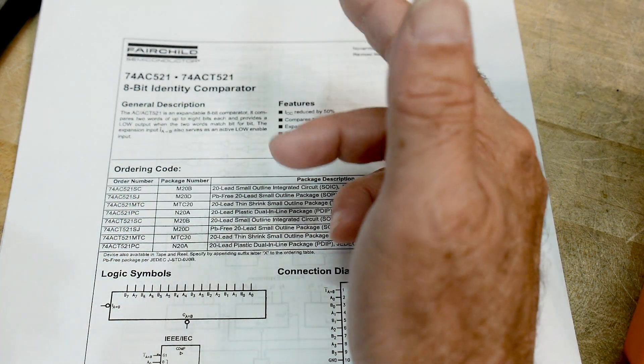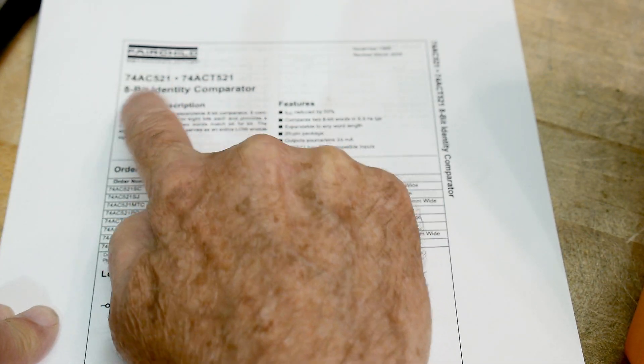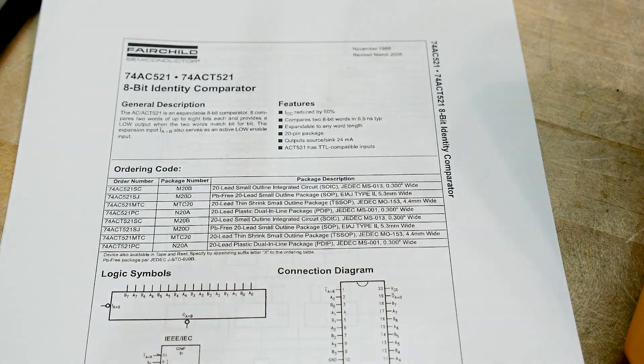Whenever you see a T, it makes it TTL compatible, so that the input and output ranges are TTL compatible. So that's what the T is. This one is just CMOS, and this one is TTL compatible if you need that.